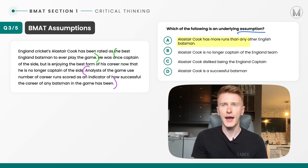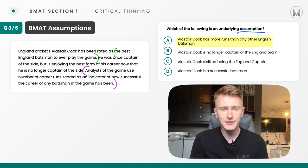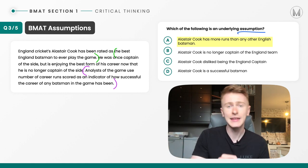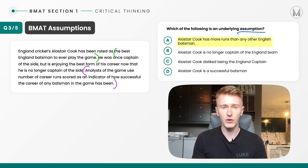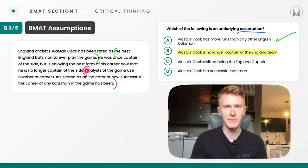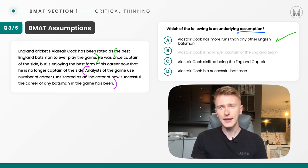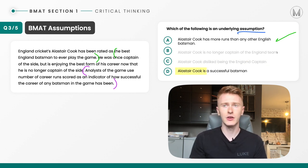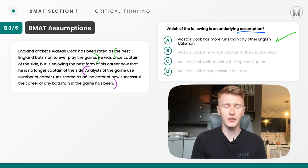A — Alistair Cook has more runs than any other English batsman. That does seem correct: working on the premise that runs equals success and knowing the conclusion is that he's the best, clearly he must have the most runs. That's the assumption the author uses, so let's give that a tick. B — Alistair Cook is no longer captain of the England team. That's directly stated in the passage, so it's not an assumption. C — Alistair Cook disliked being the England captain. That's not essential for the conclusion — it's sideline information. D — Alistair Cook is a successful batsman. That's clearly stated in the conclusion itself, not an assumption. So the correct answer is A.